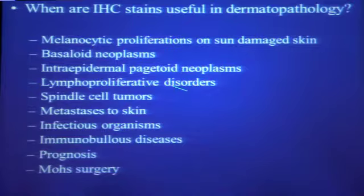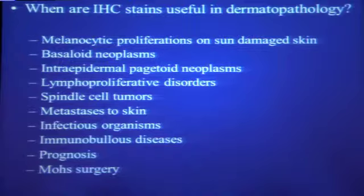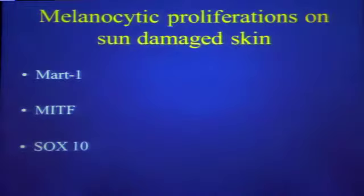They can be used for basaloid neoplasms, intraepidermal pagetoid neoplasms, lymphoproliferative disorders, and you've heard a little bit about that already. Spindle cell tumors, you almost always have to stain. Metastasis to the skin, you almost always have to stain. You can also use IHC stains for infectious organisms, and there are now more and more IHC stains for that, and even immunobullous diseases. I'll give you an example where that can be used in a very targeted way that is very useful and saves money, does not add to the cost to the patient or the insurance. They can also be used for prognosis and, of course, in Mohs surgery.